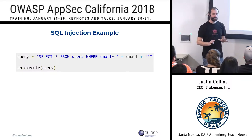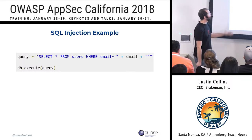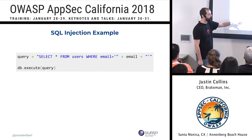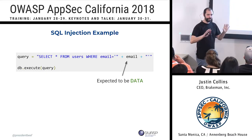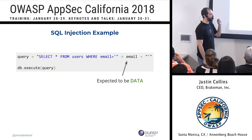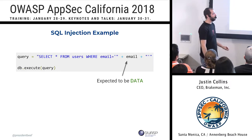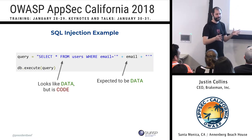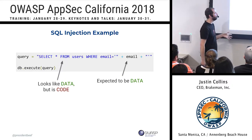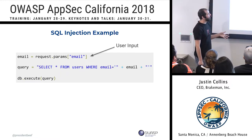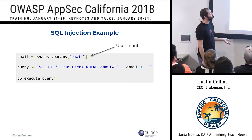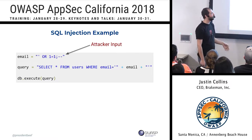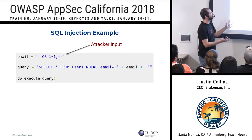Here's the classic SQL injection example: we're creating a query, putting some data into it, then executing the query on the database. To be explicit — we expect that email address to be data. In the program it's data, but we're actually going to execute it as code. That email is probably going to be user input — a request parameter — and if it's user input it means it can be attacker input.